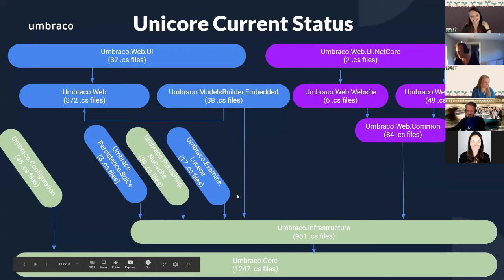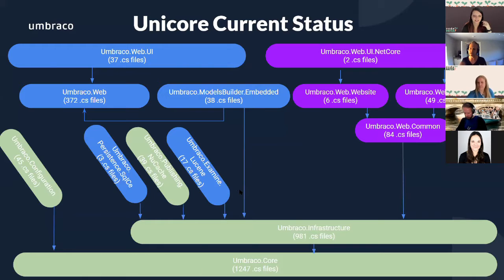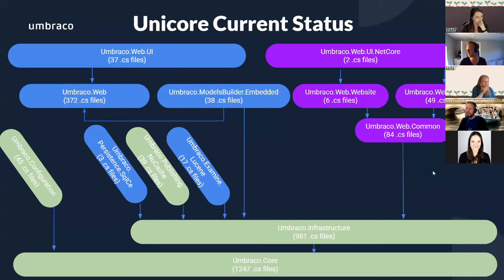The green colors are .NET Standard, meaning this code can be executed both from framework and from .NET Core. Blue is still framework, and the purple ones are .NET Core. Right now we actually have two executables — one for framework and one for .NET Core.